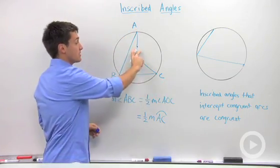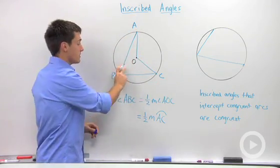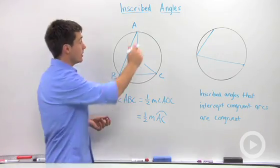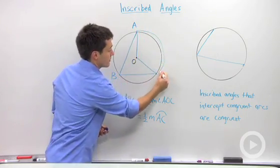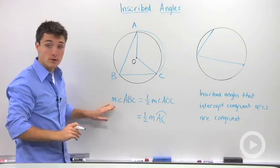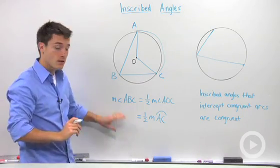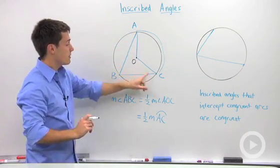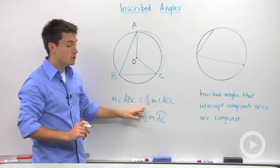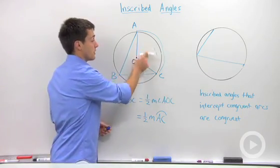there's a special relationship between the central angle and this inscribed angle when they share the same intercepted arc from A to C. And that special relationship is written in these two equations. The first one says that this inscribed angle ABC is equal to half of this central angle AOC.